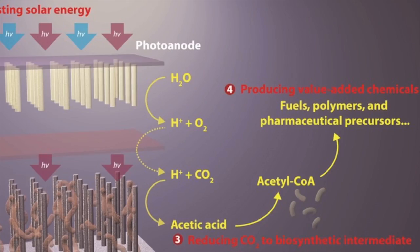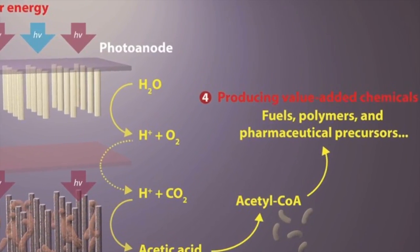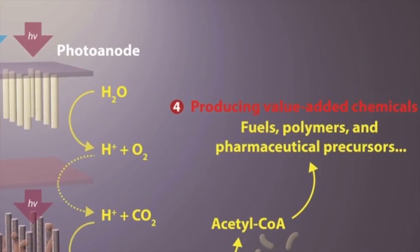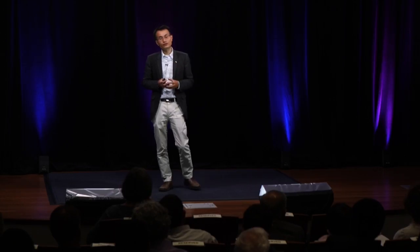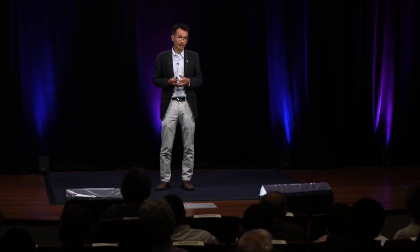Now we have this handheld device. If you bubble in CO2 and shine it with sunlight, we can basically produce chemicals, fuels, polymers, or even in some cases pharmaceutical intermediates to make drugs. And even better, our artificial photosynthetic system, in terms of its solar to chemical energy conversion efficiency, is already better than nature.